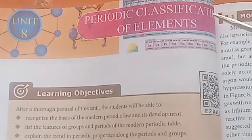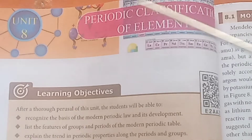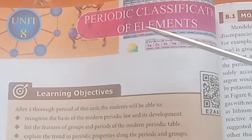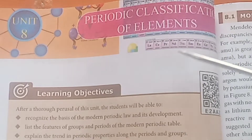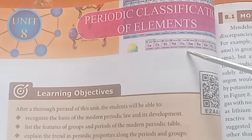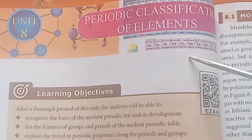Welcome everyone. This is Standard 10, Science Unit 8 - Periodic Classification of Elements. This is Part 5 video. We are going to see the book back answers - 1 mark and 2 mark questions.